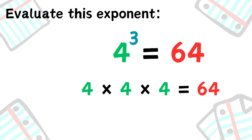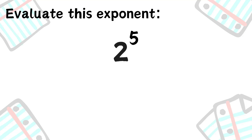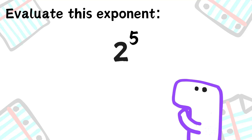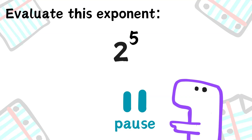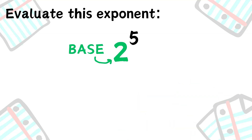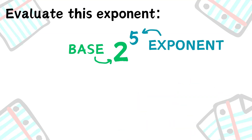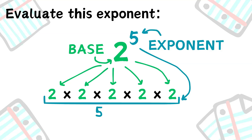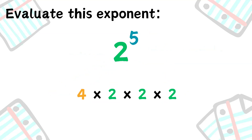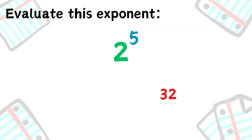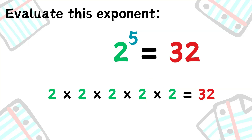Let's try another one. What would 2 to the power of 5 equal? See if you can do this on your own. The base is 2 and the exponent is 5, which means we multiply 2 together 5 times. 2 times 2 is 4, times 2 is 8, times 2 is 16, times 2 is 32. So 2 to the power of 5 is 32.